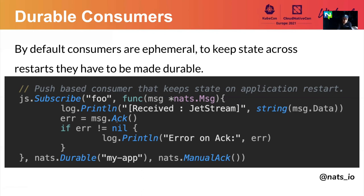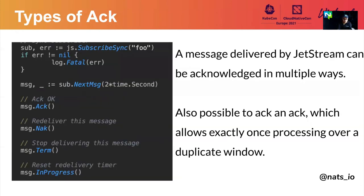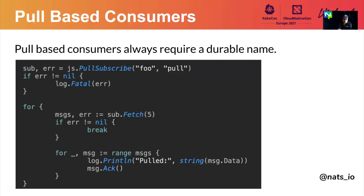A simple ACK means you're done with that message and can move to the next consumer sequence. There are multiple types of ACKs. In this case, we're making a synchronous push-based subscriber. You can simple ACK — you're done. You can ask for redelivery of the message, or terminate and stop delivering the message, or signal to the server that you're still working on the message. Pull-based subscribers are a bit different — they have a special API called pull-subscribe and the durable name is a required field, so there are currently no ephemeral pull-based subscribers.